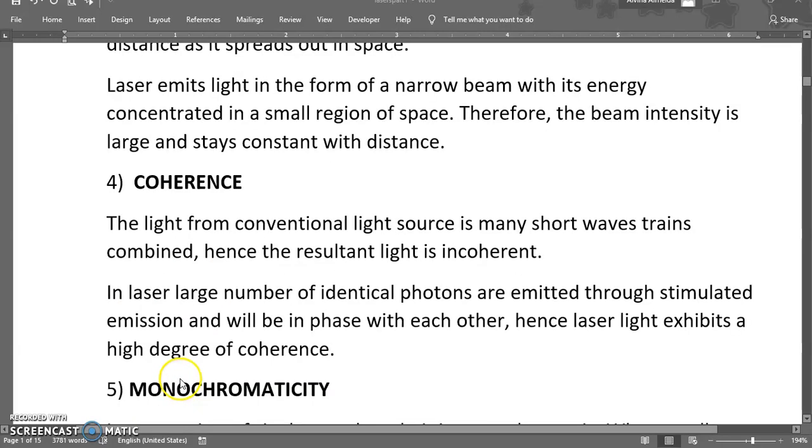Next is coherence. The light from a conventional light source is many short wave trains combined together, hence the resultant light is incoherent. Whereas in case of laser, large number of identical photons are emitted through stimulated emission and all those photons are in phase with each other. Hence the laser light has a high degree of coherence.